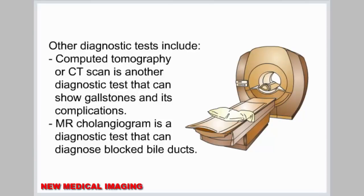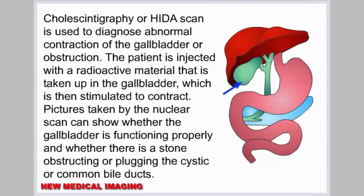Other diagnostic tests include computed tomography, or CT scan, which can show gallstones and its complications. MR cholangiogram is a diagnostic test that can diagnose blocked bile ducts. Cholescintigraphy, or HIDA scan, is used to diagnose abnormal contraction of the gallbladder or obstruction. The patient is injected with a radioactive material that is taken up in the gallbladder, which is then stimulated to contract. Nuclear scan pictures can show whether the gallbladder is functioning properly and whether there is a stone obstructing the cystic or common bile ducts.